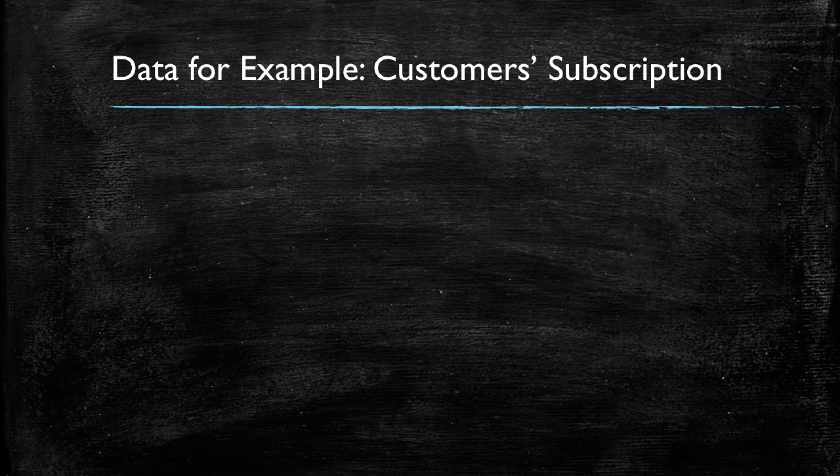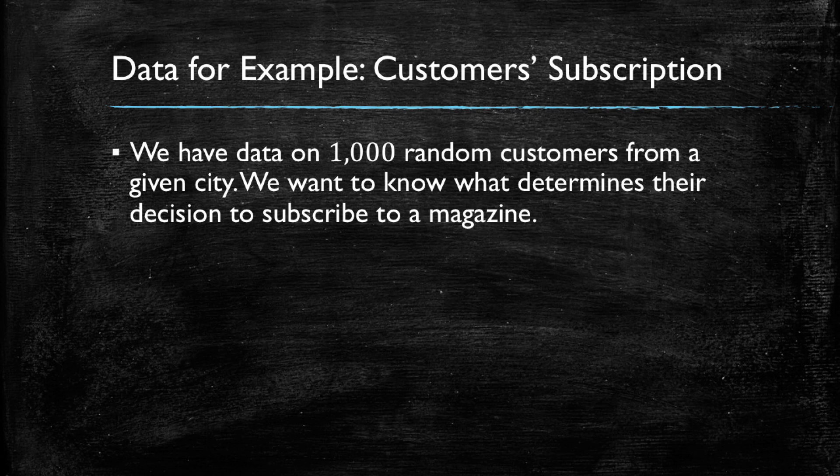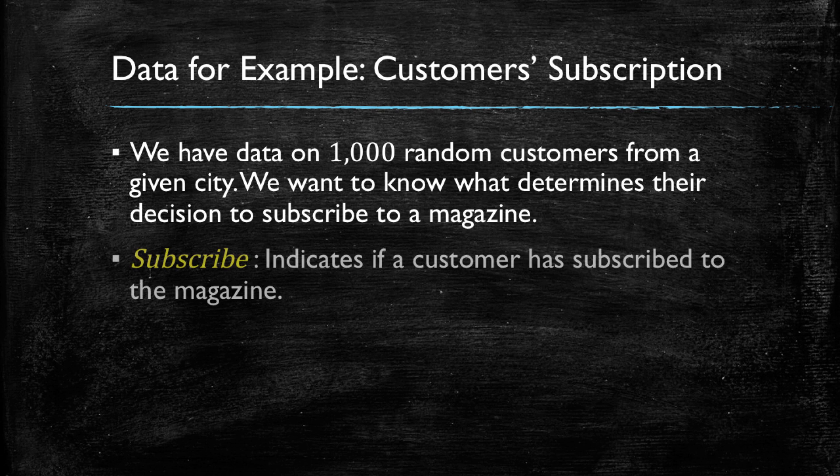The data we will be using in this example is a set of 1,000 random customers from a given city. And we want to know what determines their likelihood or decision to subscribe to a particular magazine. Our dependent variable, naturally, is going to be an indicator variable that tells us if the customer has subscribed to the magazine or not.